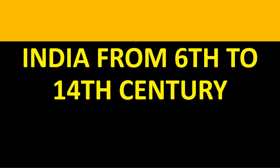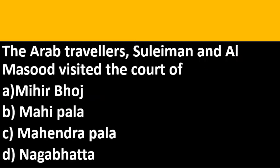Lesson two: India from 6th century to 14th century. The Arab travelers Sulaiman and Al-Masudi visited the court of — options are Mihirabhoj, Mahipala, Mahendrapala and Nagabhatta. The correct option is Mihirabhoj.